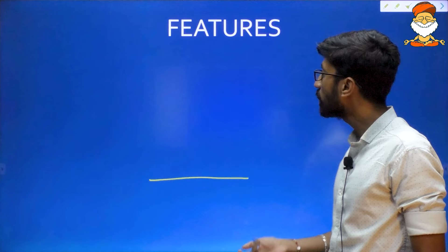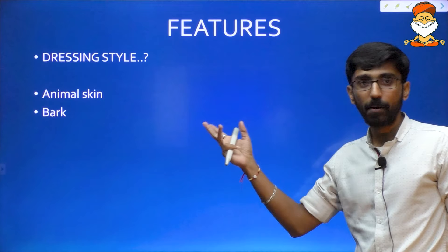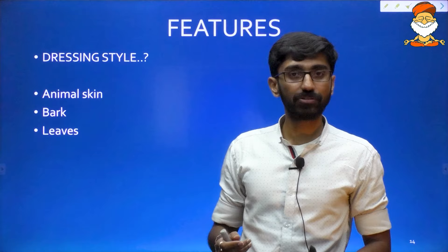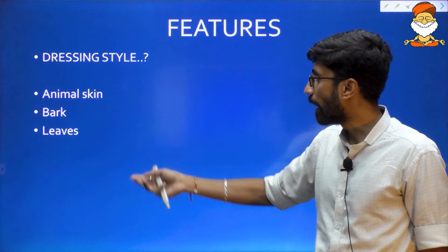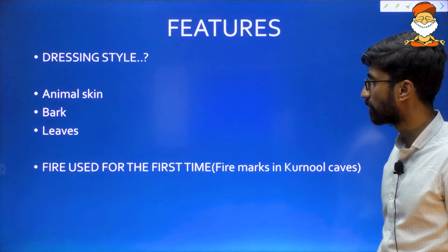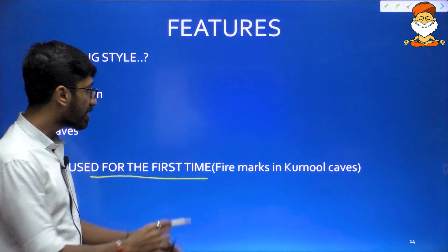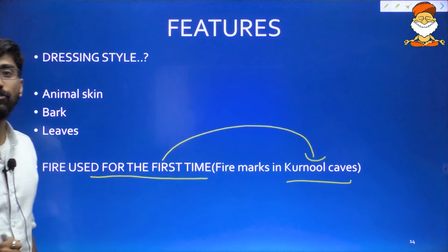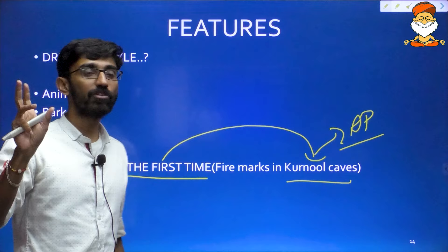What was the dressing style of Early Paleolithic people? They used animal skins, bark of trees, and leaves to cover their bodies. There were no clothes during that point of time. This is also the Early Paleolithic — Lower Paleolithic — time period when fire was used by humans for the first time. The evidence for this is found in Kurnool caves, which is in Andhra Pradesh.